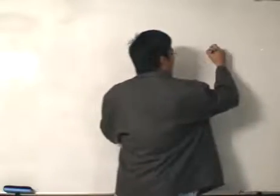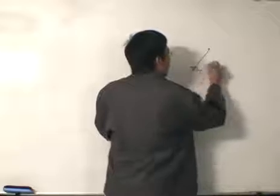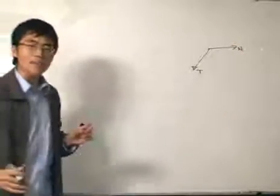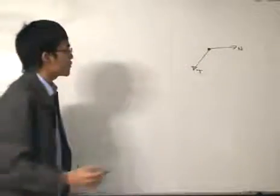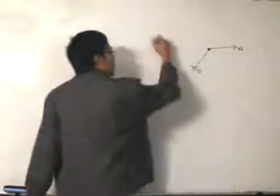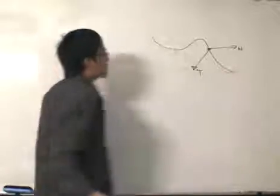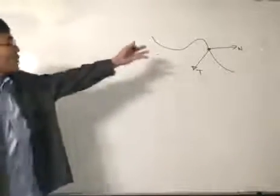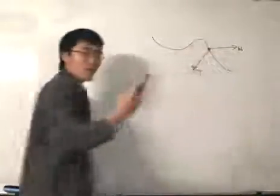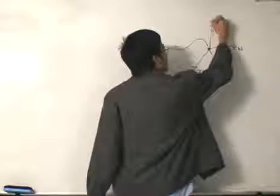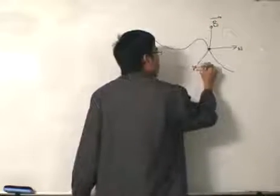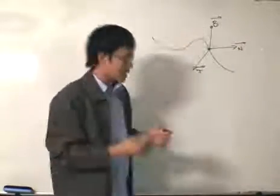What torsion is all about: we are defining two unit vectors — the unit tangent and the unit normal. When we're in three-dimensional space, at a point on a curve we have the corresponding unit tangent and unit normal vectors. As the trajectory goes along, there's obviously another vector we can find to form a three-dimensional frame, and that is what we call the binormal vector.